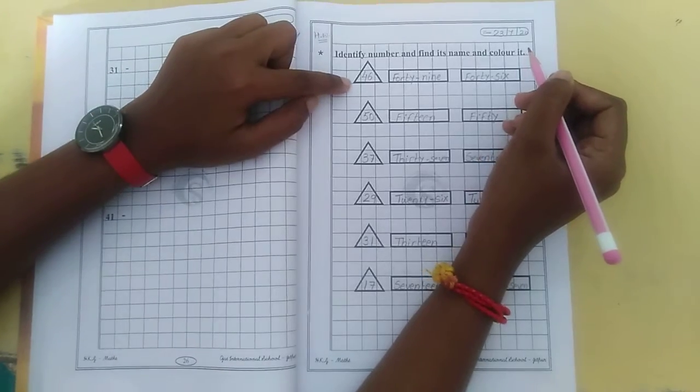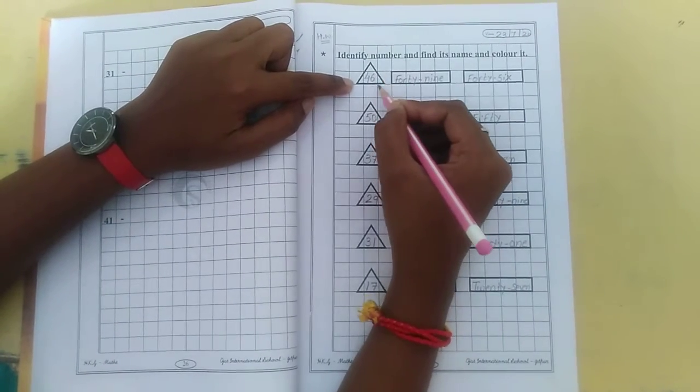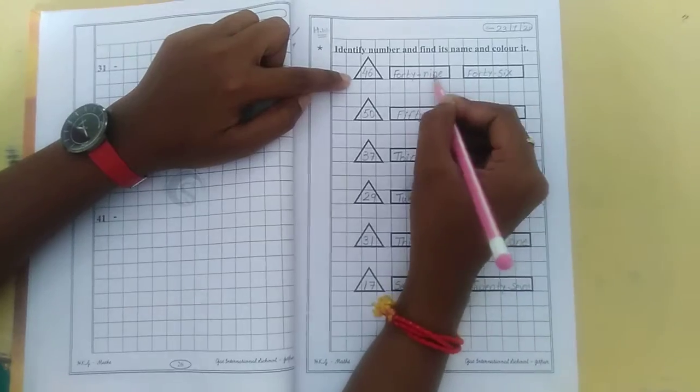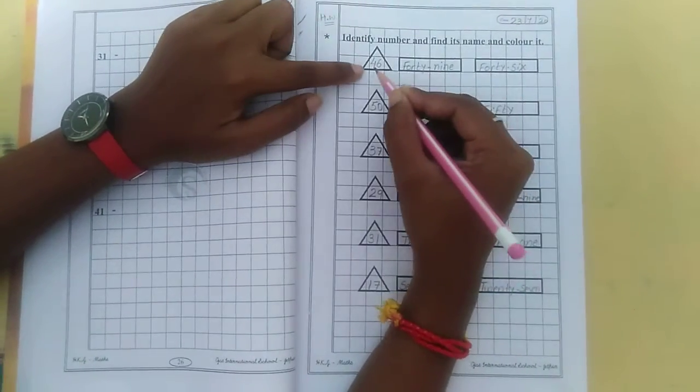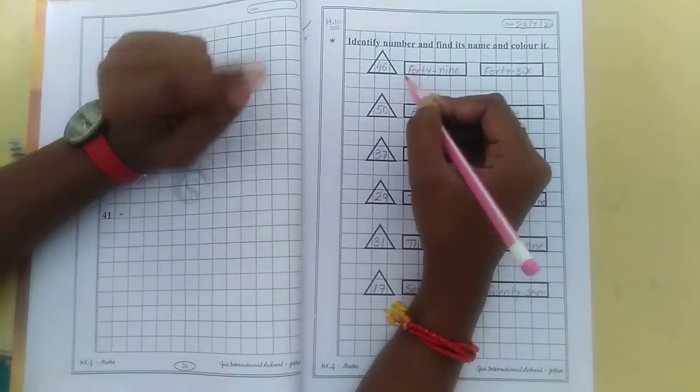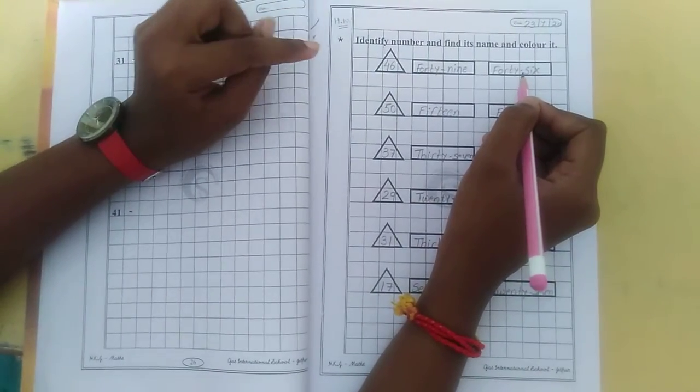Can you see here number name, number in this triangle? And here two number names are given. What you have to do? You have to read the number, find its number name and fill the color, okay?